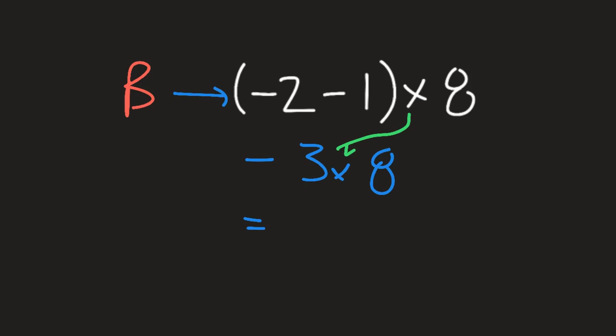What's negative times a positive? It's a negative. And what's 3 times 8? It's 24. So our answer is negative 24. All right, next example.